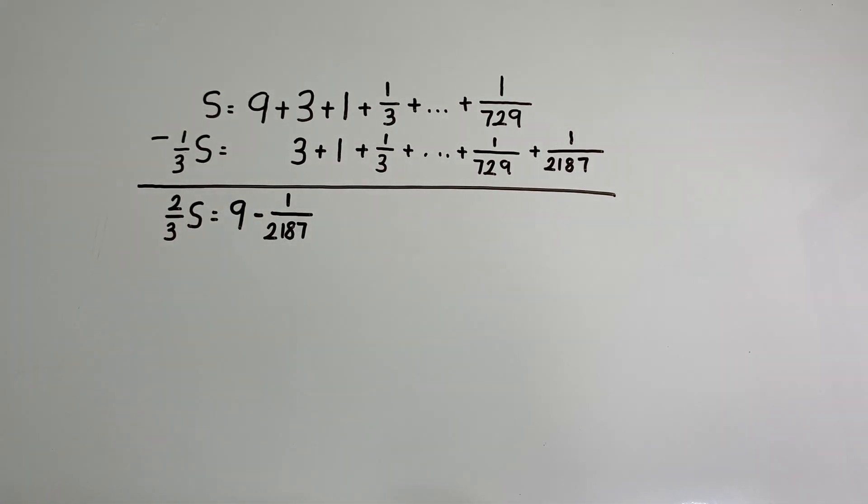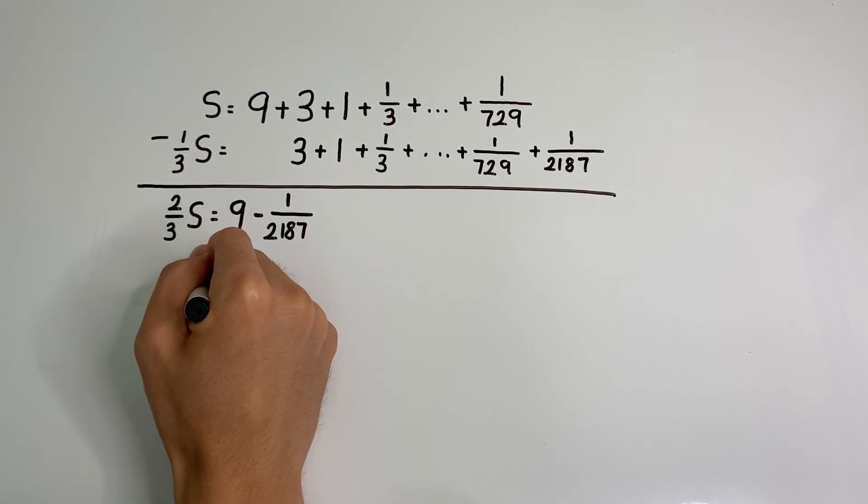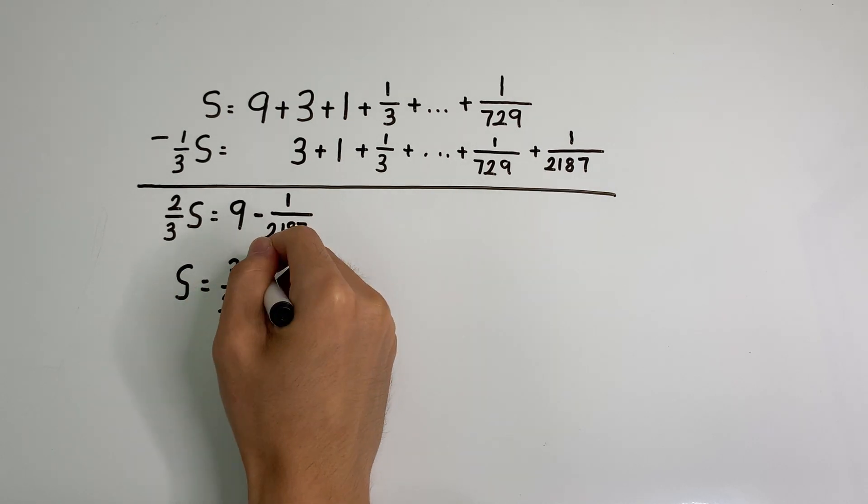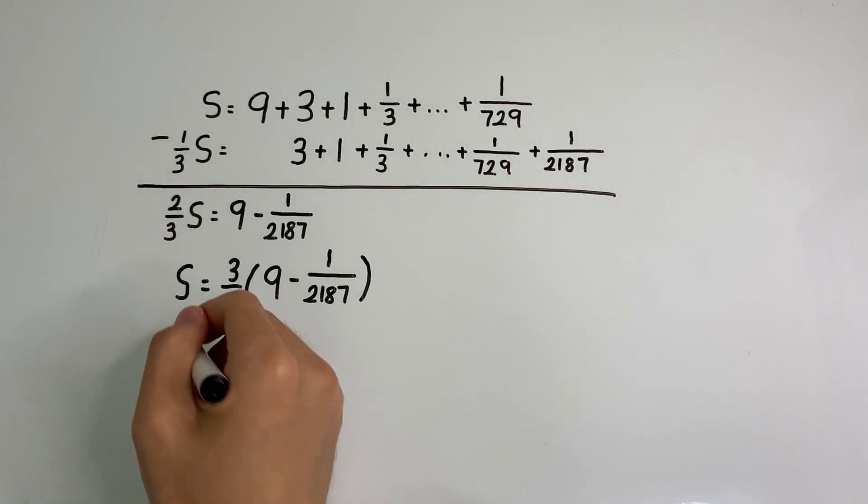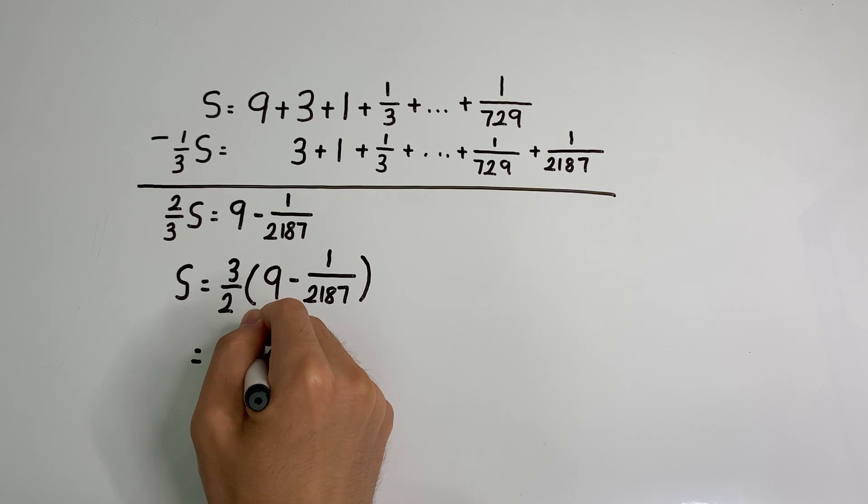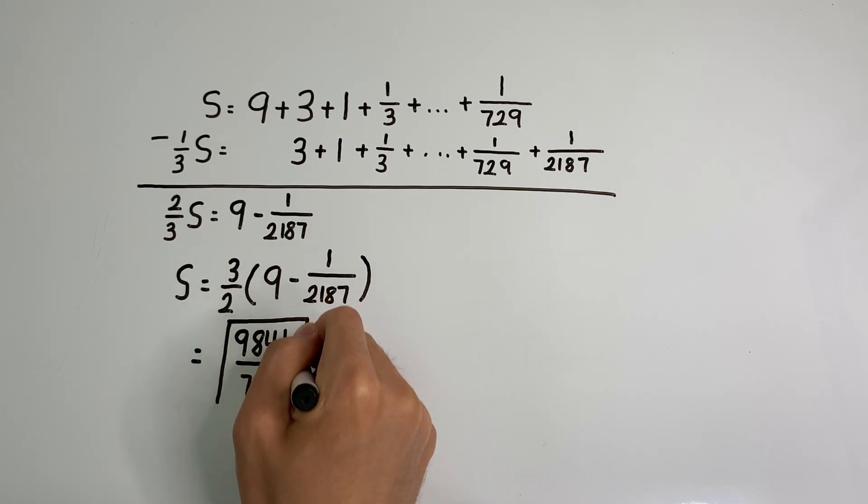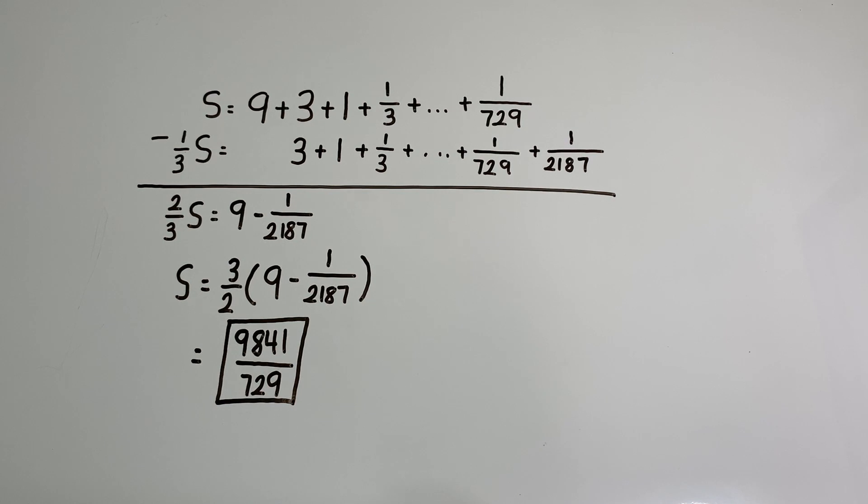But remember, this is 2 thirds S, and we want S on its own. So the answer that we are really looking for is 3 over 2 times this entire expression. And once you do that, you'll find that S equals 9841 over 729. And once again, no formulas were involved at all. We used the same method to evaluate a geometric series with a common ratio less than 1 this time. But now that we've seen two problems using the same method, let's see if we can generalize and find a formula.